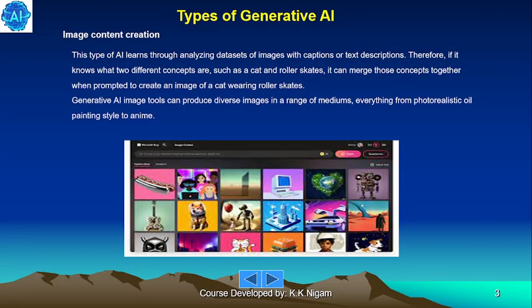Image content creation. This type of AI learns by analyzing data sets of images with captions or text descriptions. Therefore, it knows what two different concepts are, such as cat and roller skates. It can merge those concepts together when prompted to create an image of a cat wearing roller skates. Generative AI image tools can produce diverse images in a range of mediums, from photorealistic to painting style.